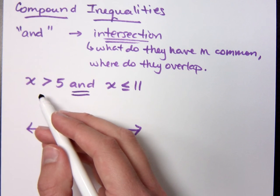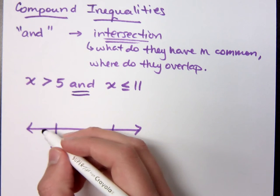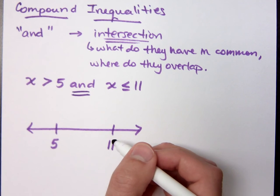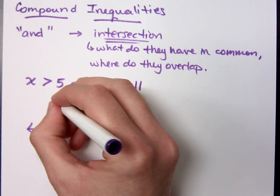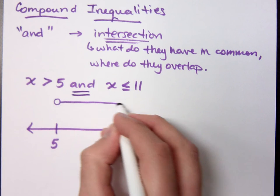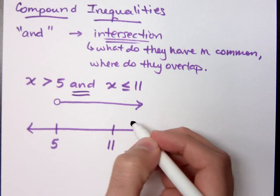For x is greater than 5, it means an open circle at 5 going out to the right. But since we're only looking for the intersection, for what they have in common, I'm going to sketch this out above the graph. So x is greater than 5 would be something like this, going all the way out to the right.